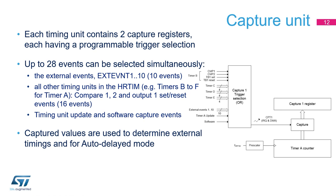In parallel with the compare units, each timer also embeds two capture units. The capture triggers the transfer from the current counter value into the capture register. This is useful for determining external timings and for the auto-delayed mode. Typically, it offers the possibility to measure the effective duty cycle in a cycle-by-cycle current-controlled converter where the PWM pulse is terminated when the current comparator trips. The capture triggers can be selected from among 28 sources: external events, adjacent timing events, adjacent output waveforms, as well as update and software events.